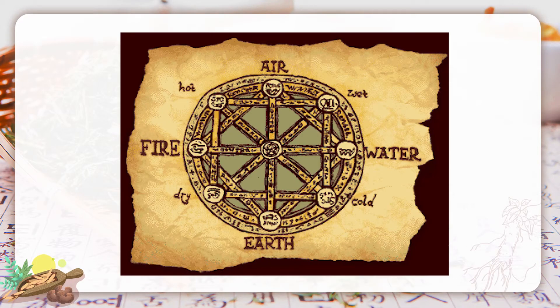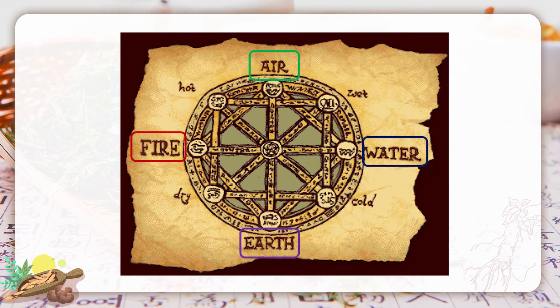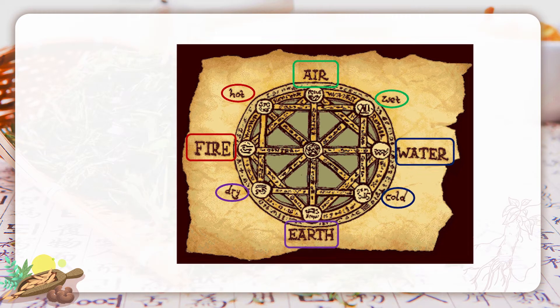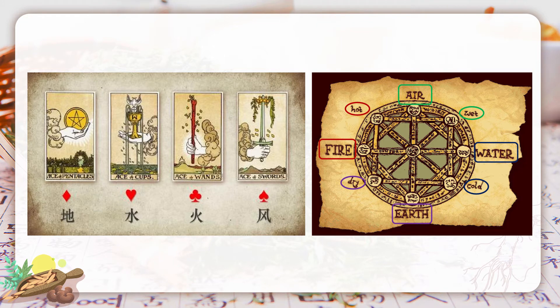According to Greek philosophy, everything in the universe consists of four elements: fire, water, wind, and earth. These four elements are characterized by hot, cold, wet, and dry in property. That's why in some European countries they have their own four-element theory, which is different from ours and sometimes causes confusion. This is tarot, a divination game. If you've played it before, you may know there are fire, water, wind, and earth — the four elements in codices. But this is not what we are going to learn today; what we focus on is the five element theory of Chinese philosophy.